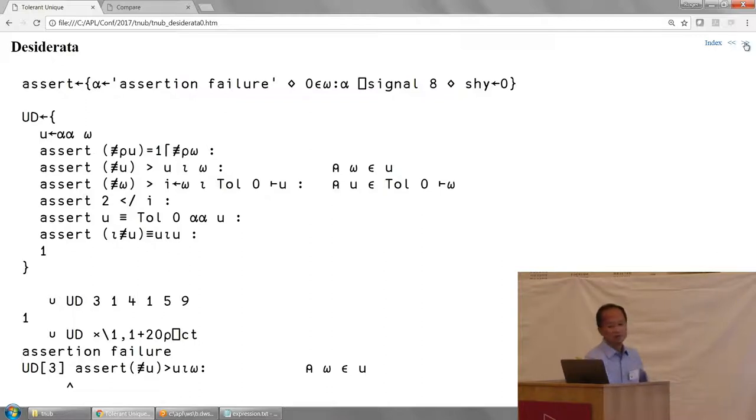Let me go through the set of desiderata. The rank of the unique should be the same as the rank of the argument, but at least one. When you have these exceptions like that in the desiderata, it's an indication that probably there's a hitch in the design.